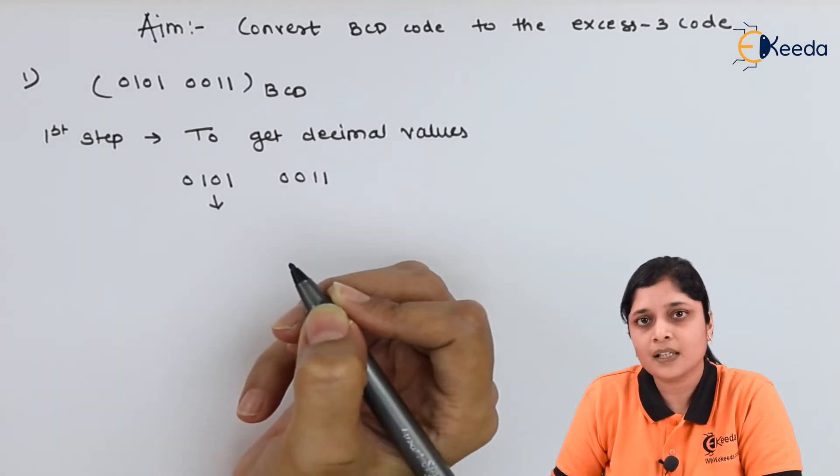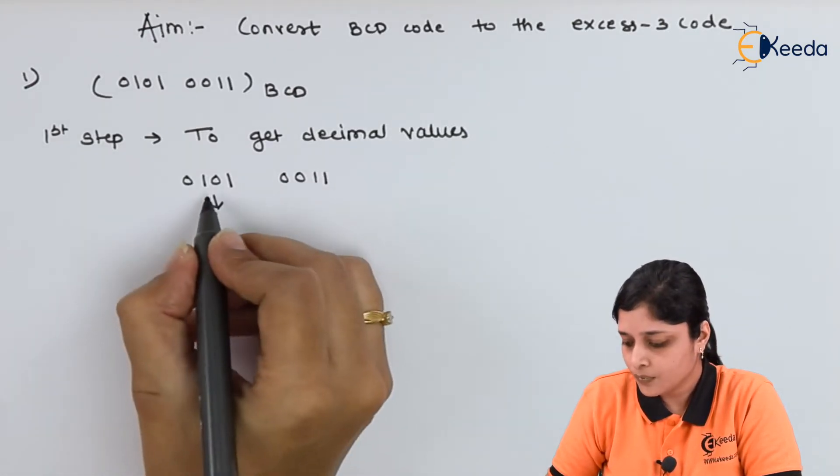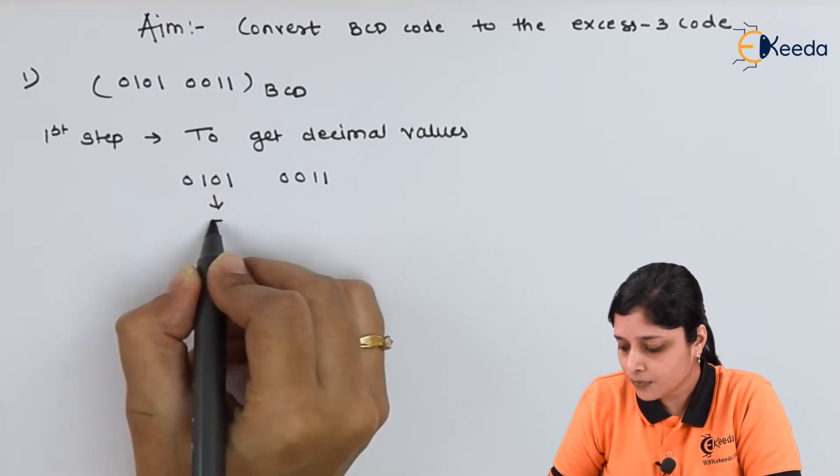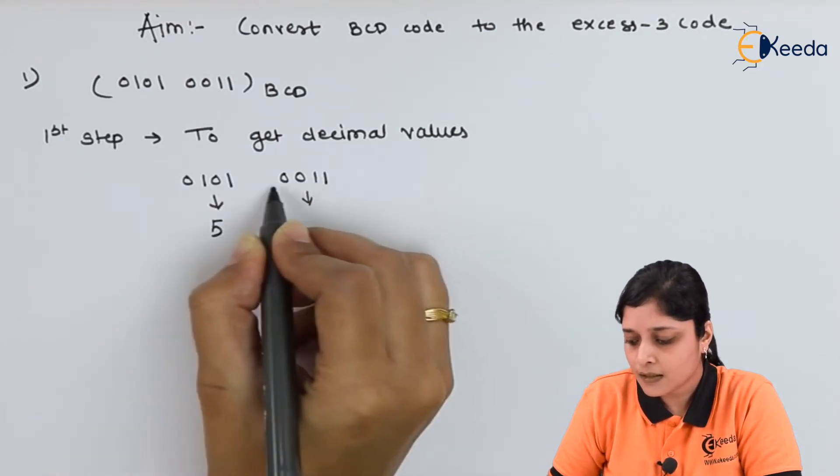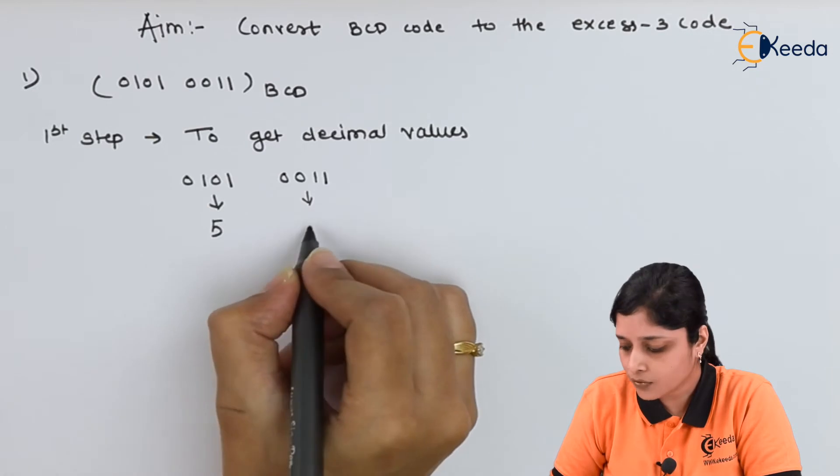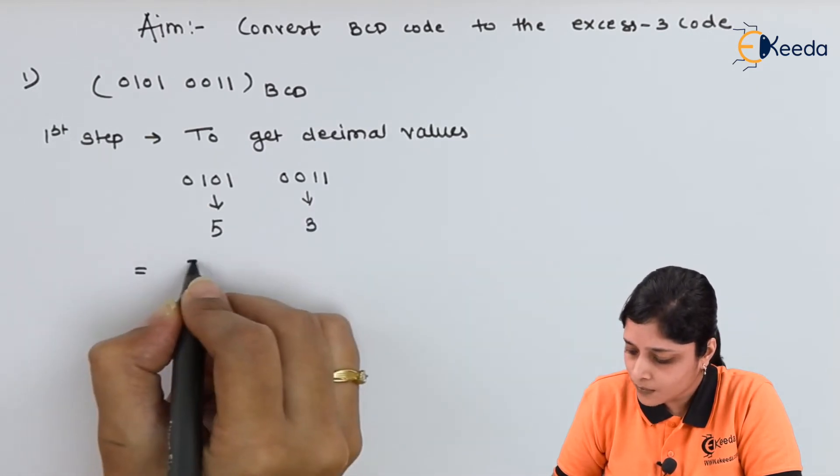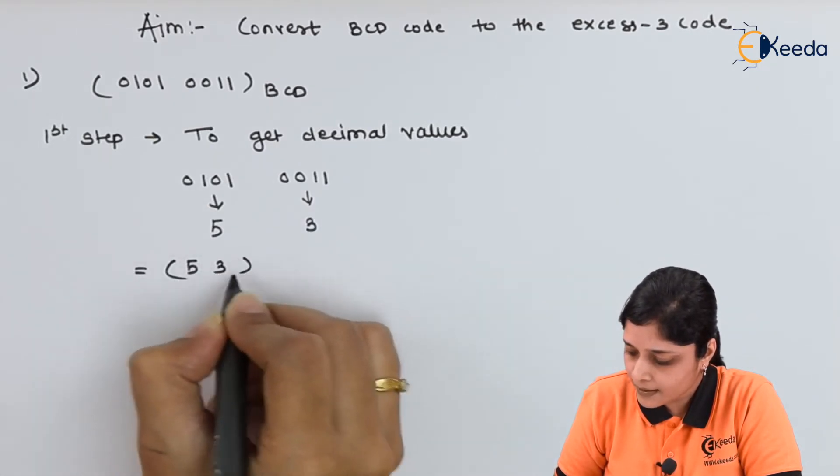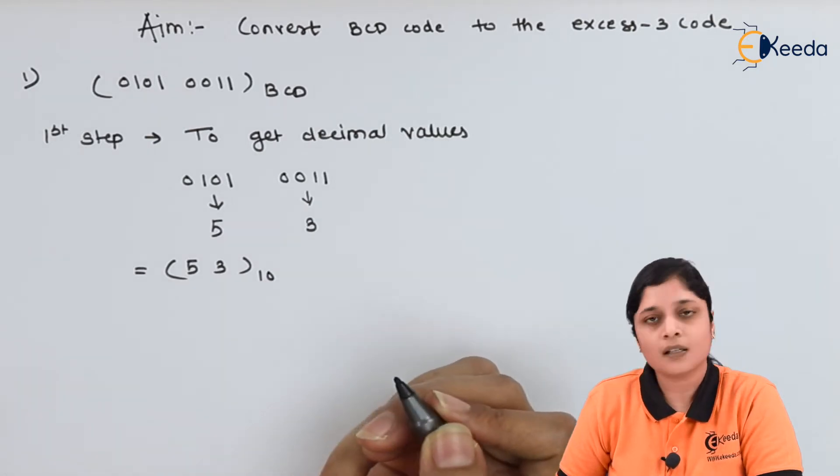So for each BCD code 01010011, we can write its decimal value is 4 plus 1, 5. 0011 you will get 3. So 53 to the base 10 is the decimal value.